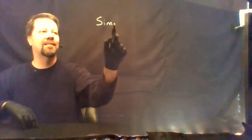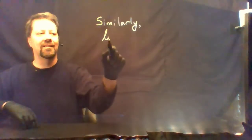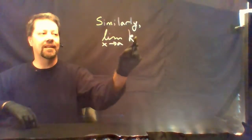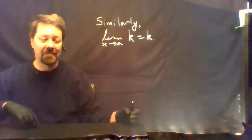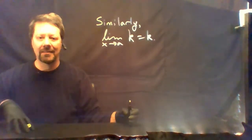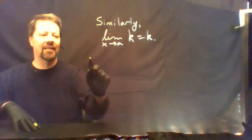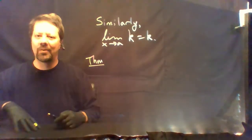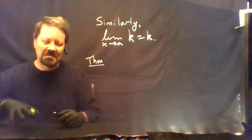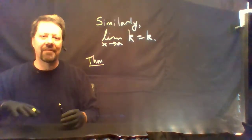Similarly, the limit as x goes to A of just a constant k is k. In this case, no matter what you choose for epsilon, you can choose anything you want for delta. You'll always stay within that epsilon unit.